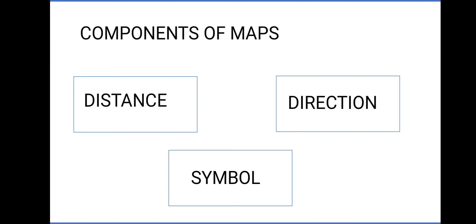Now, we will talk about components of maps. There are three important components: distance, direction, and symbols. First, we will discuss distance.